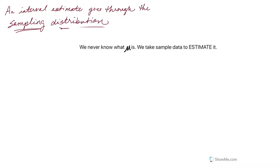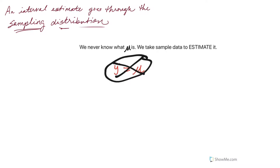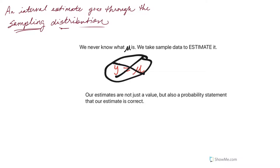Keep in mind, we never know what the true population parameter is. We take samples so that we can estimate what the population parameter is. Obviously, if we knew what the true mean was, we wouldn't need to take a sample. What we never do is simply take sample data and say that's what's in the population — if it's true for the sample, it's true for the population. That would be really naive.